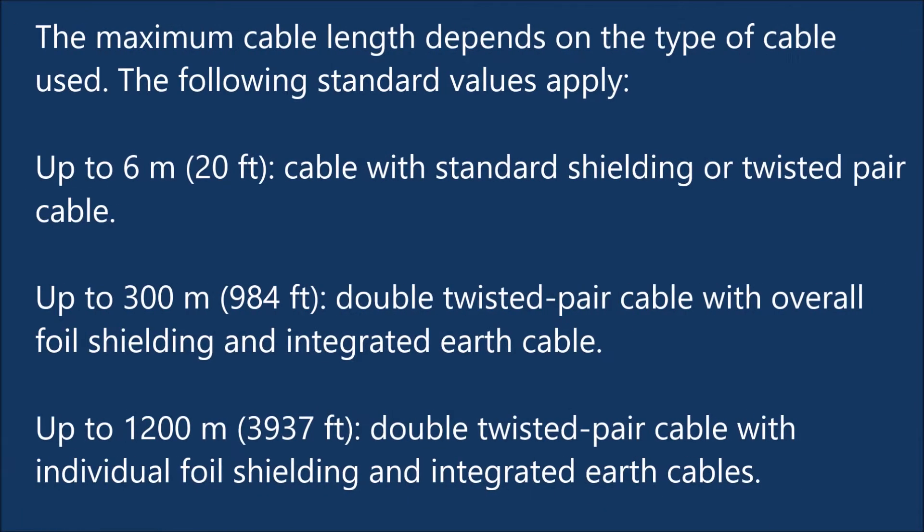The maximum cable length depends on the type of cable used. The following standard values apply: up to 6 meters (20 feet) with cable with standard shielding or twisted pair cable; up to 300 meters (984 feet) with double twisted pair cable with overall foil shielding and integrated earth cable; up to 1,200 meters (3,937 feet) with double twisted pair cable with individual foil shielding and integrated earth cables.